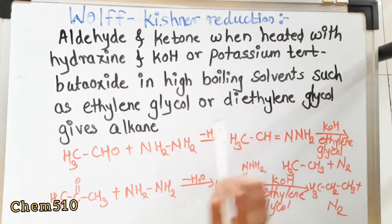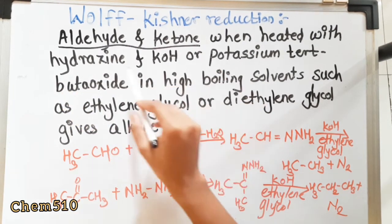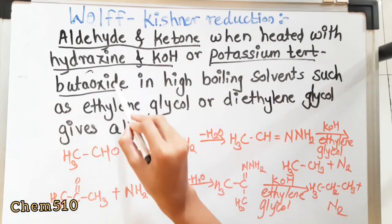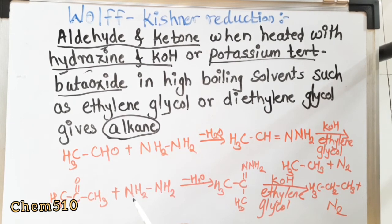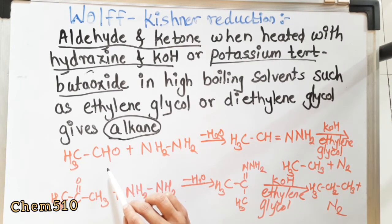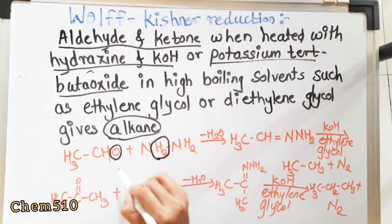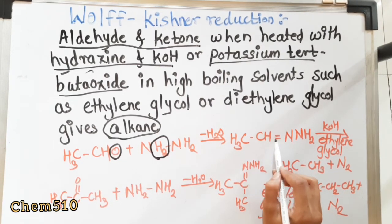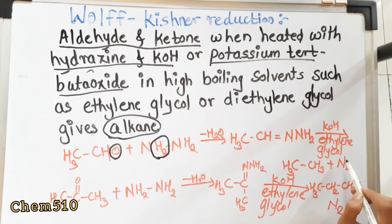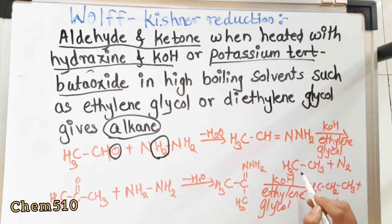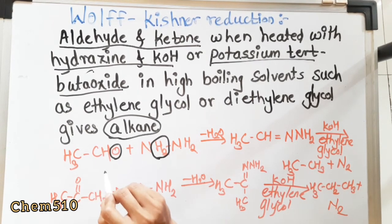In this reduction, aldehydes and ketones act as reactants, hydrazine with KOH or potassium tertiary butoxide act as catalysts, and alkanes are the product. The reaction is: CH₃CHO (acetaldehyde) reacts with hydrazine (NH₂NH₂), forming an intermediate, and N₂ is evolved.